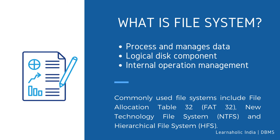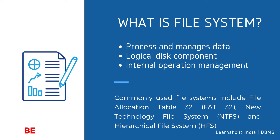First, we will see what file system means. In technical terms, a file system is a process that manages how and where data on a storage disk — typically a hard disk drive (HDD) — is stored, accessed, and managed. It is a logical disk component that manages a disk's internal operations as it relates to a computer and is abstract to a human user.